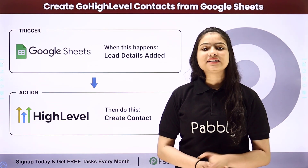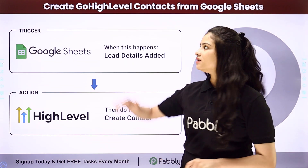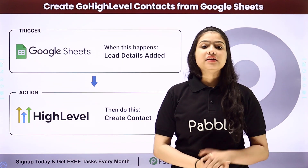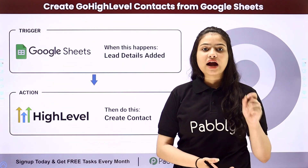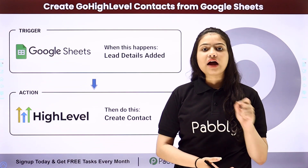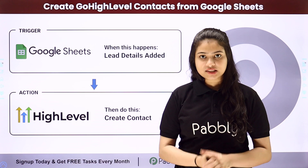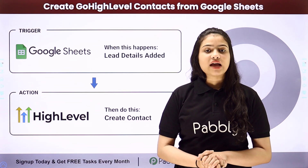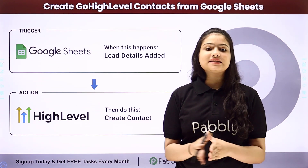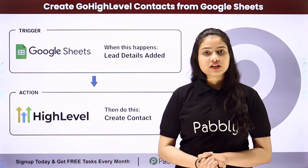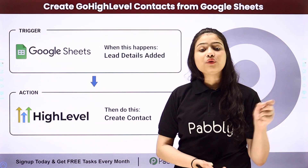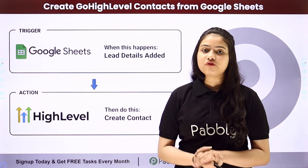Hello everyone, welcome back to Babli Connect. In this video we are going to learn how to create Go High Level contacts from Google Sheets. Let's suppose I have prepared a spreadsheet to add lead details in Google Sheets, and I want that as soon as I add a new lead detail in Google Sheets, that same lead should be automatically added as a contact in my Go High Level CRM application. We are going to do this without any coding or programming skills with the help of Babli Connect.